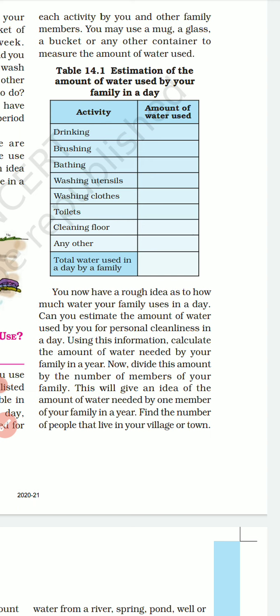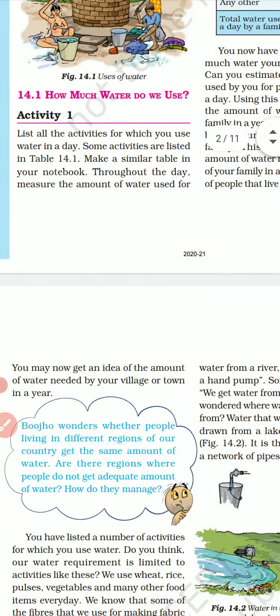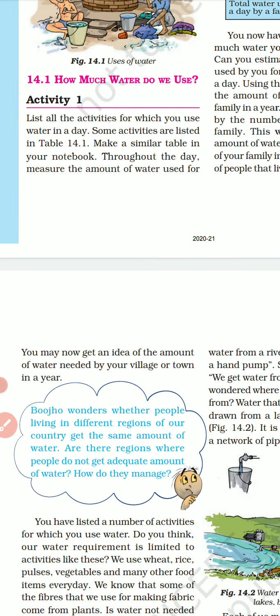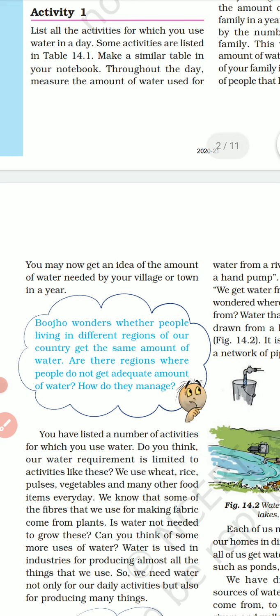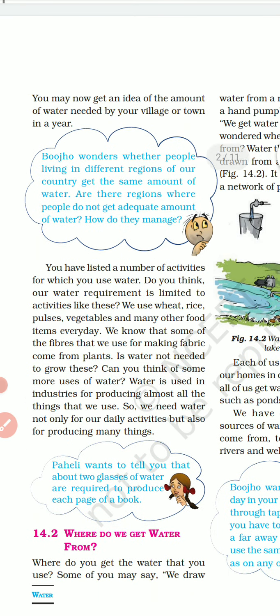Now divide this amount by the number of members in your family. This will give you an idea of the amount of water needed by one member of your family in a year. Then find the number of people living in your village, town, or colony, and you can get an idea of the total water needed by your community in a year.